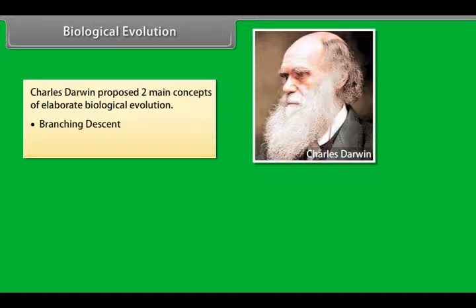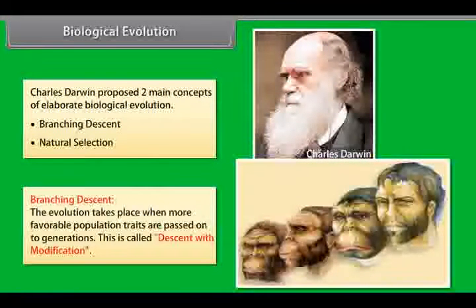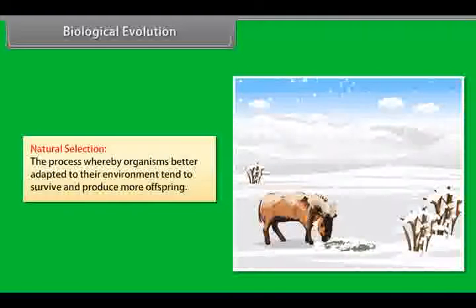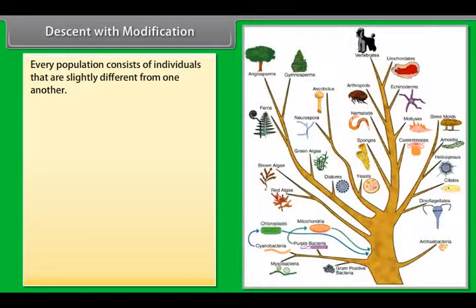Charles Darwin proposed two main concepts of biological evolution: 1. Branching Descent and 2. Natural Selection. Branching Descent is when evolution takes place as more favorable population traits are passed on to future generations — this is called descent with modification.